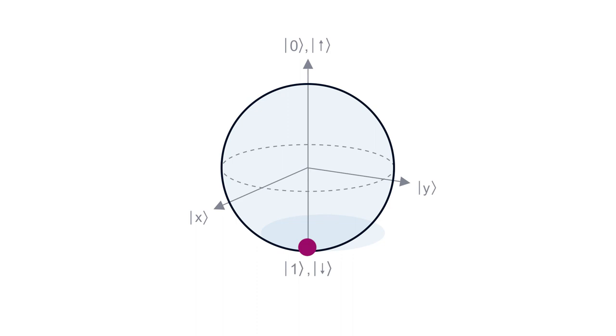If we apply a single pi-pulse in the middle of the sequence, we can cancel some of the noise. Consider a spin pointing on the equator. If the Larmor frequency is different from the microwave source clock, a phase will accumulate over time. Thus, the spin will evolve over the equator.